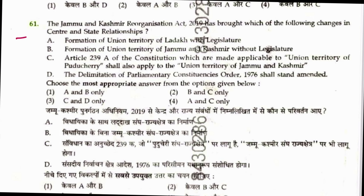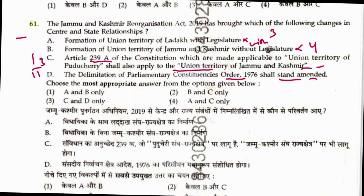Question 61: The Jammu and Kashmir Reorganization Act — formation of Union Territory of Ladakh with legislature — no, Ladakh has no legislature. Jammu and Kashmir without legislature — no, it has a legislature. So both A and B are wrong. Ladakh is Section 3 of the Act, Jammu and Kashmir is Section 4. Article 239A of the Constitution made applicable to J&K is correct — in Section 13. The Delimitation of Parliamentary Constituencies Order 1976 shall be amended — correct, Section 11. So C and D are correct. Answer is 3.